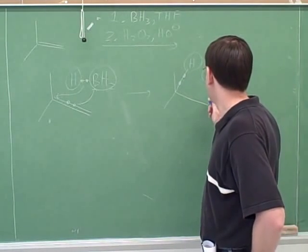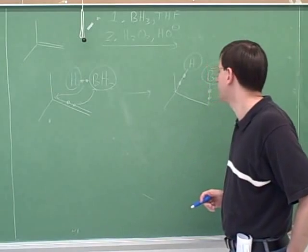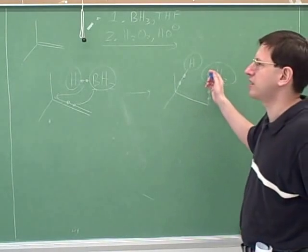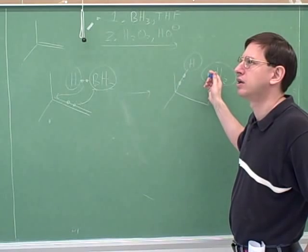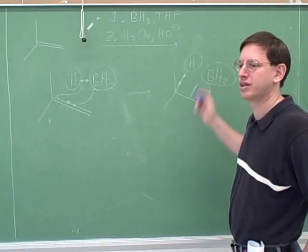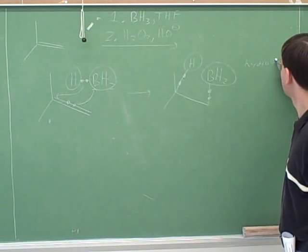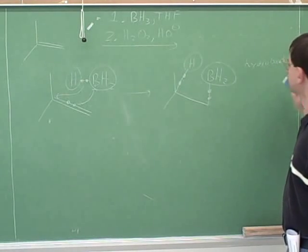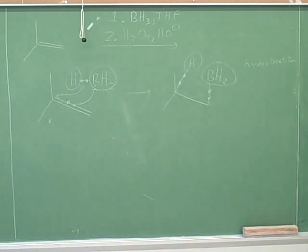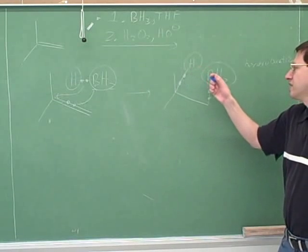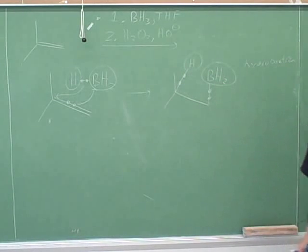So it makes sense that the boron would end up on the less substituted carbon for steric hindrance reasons. Now this step here is called hydroboration. That's a very logical name because we added a hydrogen and this boron group. Just like before we've seen halohydrogenation when we add a halogen and a hydrogen, or hydrogenation when we're adding two hydrogens.